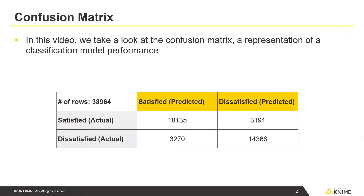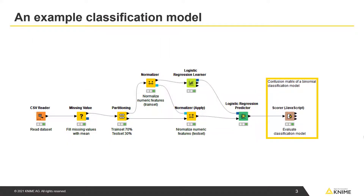In this video, we take a look at the confusion matrix, a representation of a classification model's performance. Here, you see an example classification model that predicts customer satisfaction for a fictitious airline using the logistic regression algorithm.